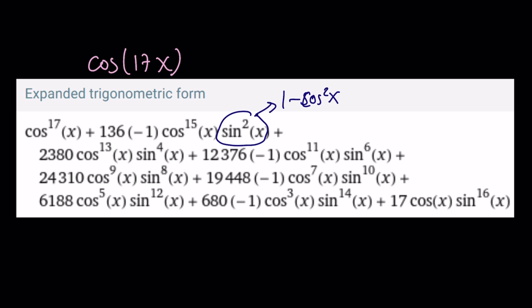And when you do that, you're going to get something gigantic, something that looks like this. f(cos x) = cos(17x). And that is going to look like cos¹⁷x, and then you're going to have -136 cos¹⁵x multiplied by (1 - cos²x), so on and so forth. There's going to be a lot of terms.